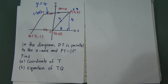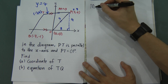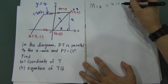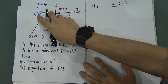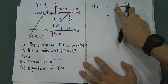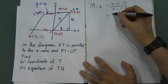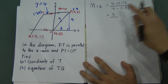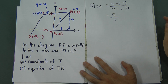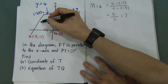First, find the gradient of TQ. Gradient m = (y₂ − y₁)/(x₂ − x₁) = (4 − (−1))/(−2 − (−7)). Remember, negative times negative gives positive. So the numerator is 4 + 1 = 5, and the denominator is −2 + 7 = 5. So 5 divided by 5 gives gradient = 1.